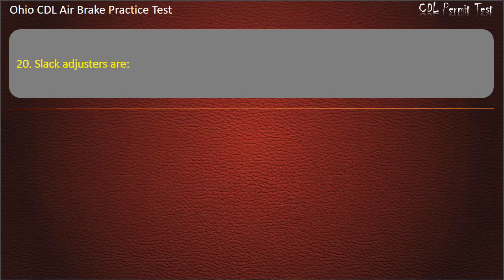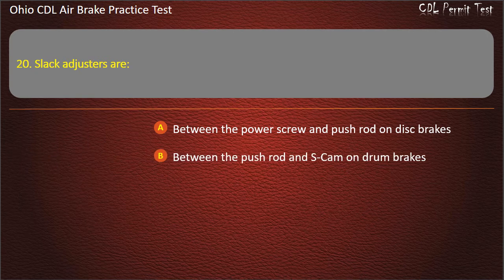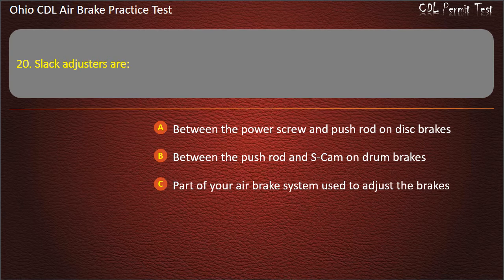Question 20: Slack adjusters are: between the power screw and push rod on disc brakes; between the push rod and S-cam on drum brakes; part of your air brake system used to adjust the brakes; all of the above. Answer: All of the above.